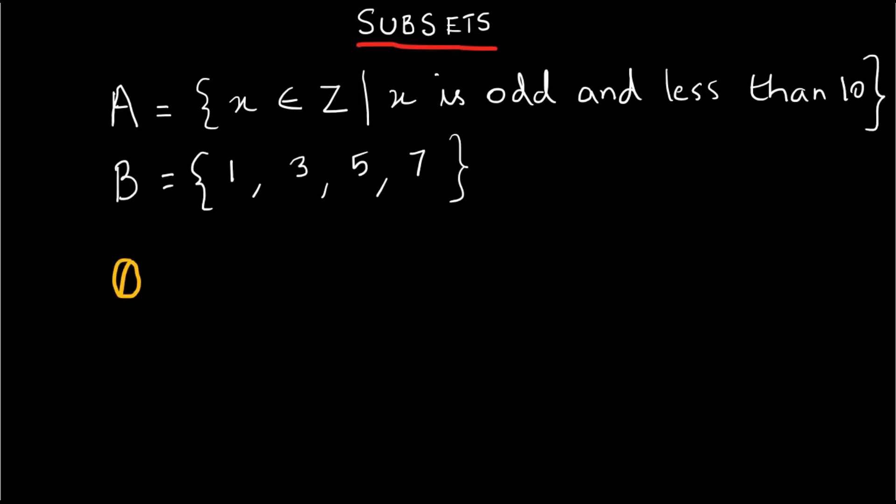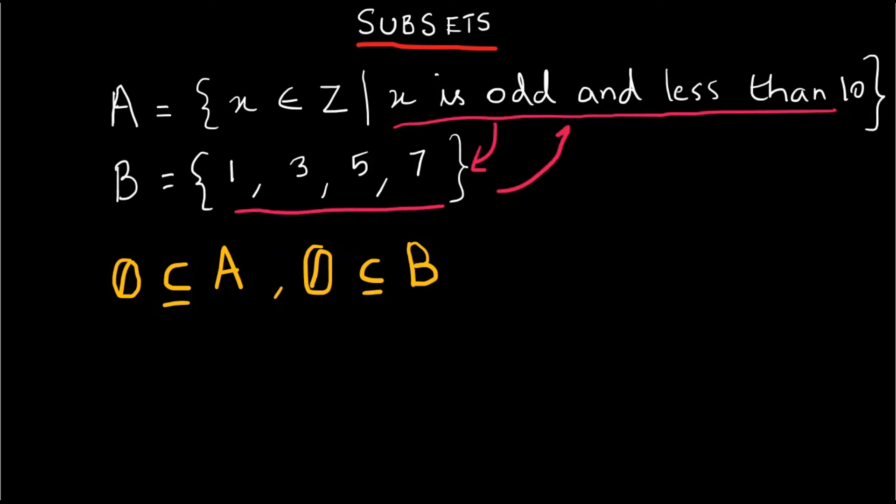First, empty set is member of both sets. Second, all elements in set A are also in set B and all elements of set B are in set A. Therefore, they are subsets of each other and equal.